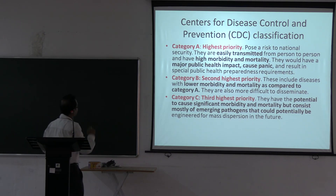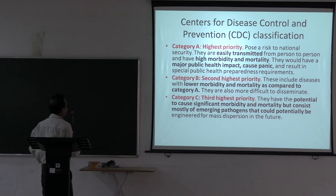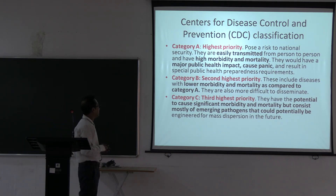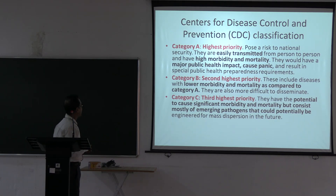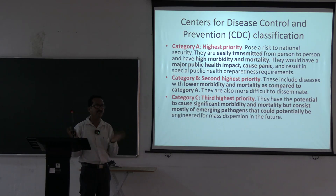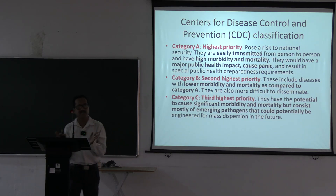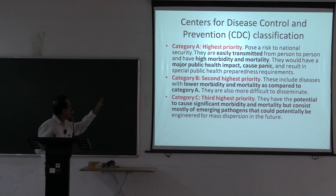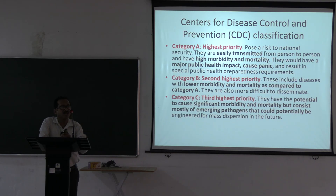Category A agents are very easily disseminated among populations. Category C agents have the third highest probability, with potential to cause significant morbidity and mortality, and mostly consist of emerging viral diseases. If you know Category A and Category C, all others fall under Category B.